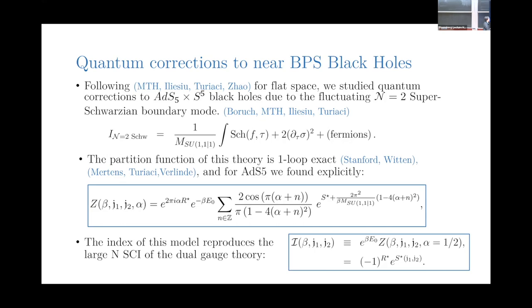Based on some previous work in flat space, we understood these AdS5 times S5 black holes in the near-horizon region at low temperatures: there's essentially an N=2 super-JT gravity theory that describes the near-horizon fluctuations. The super-JT theory is equivalent to a supersymmetric Schwarzian theory. We found that the partition function at least at low temperatures — neglecting logarithmic corrections, D-branes, and sums over more complicated geometries — can be written as a sum over geometries with some charges and chemical potentials, where each contribution has an e to the classical action. This S-star is exactly the entropy recovered from the index or the supergravity calculation.